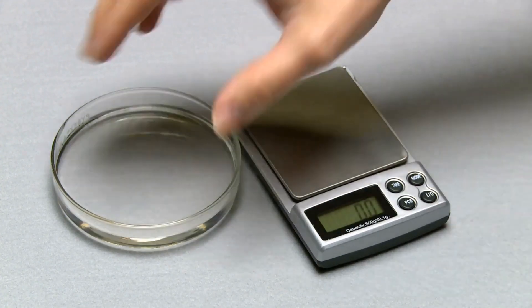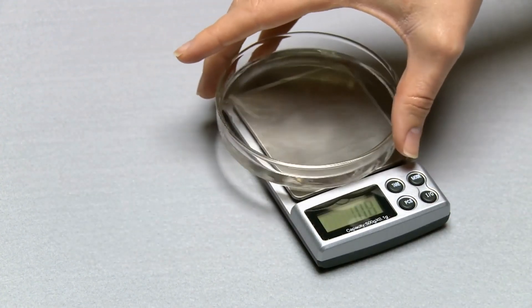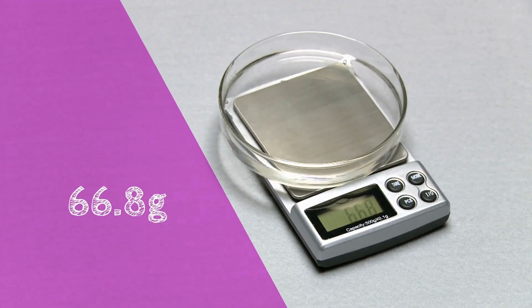Now we'll measure the mass of the ethanol that's still left in the petri dish, and its mass has gone down to 66.8 grams.